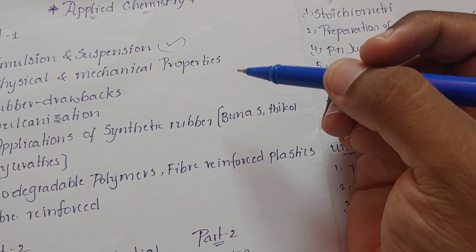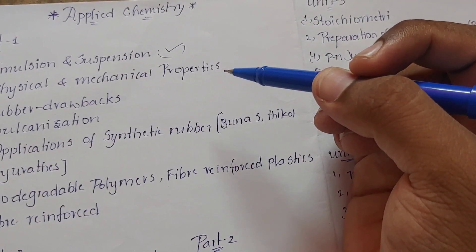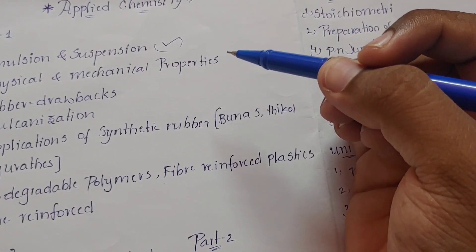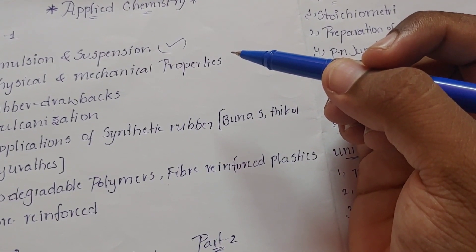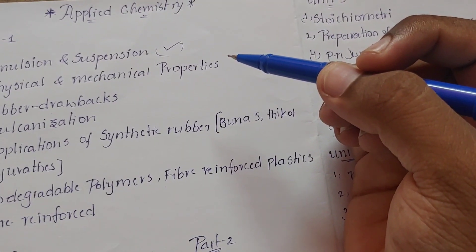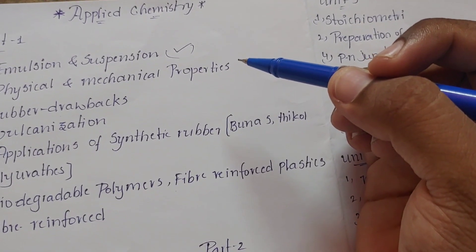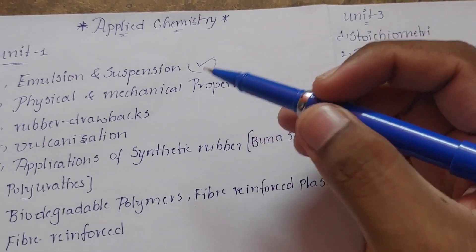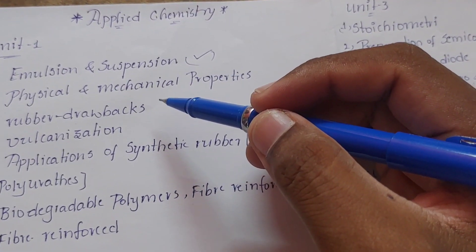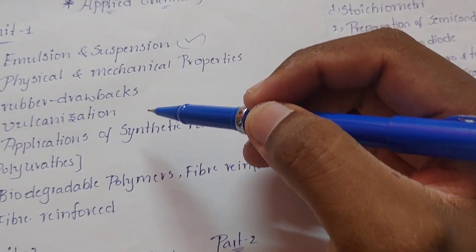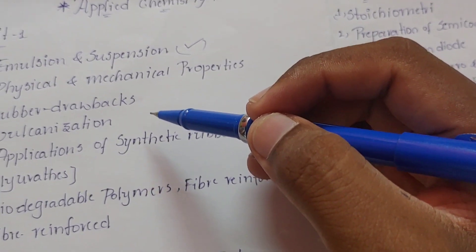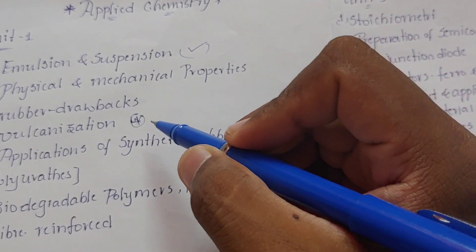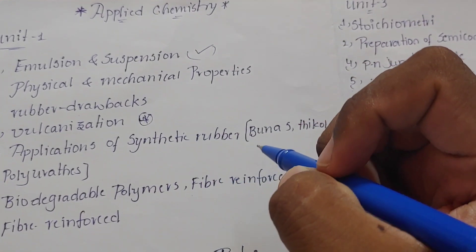In Unit 1, we will cover mechanical and physical properties. There is a simple table showing the differences between physical and mechanical properties. Other important topics include natural rubber and synthetic rubber, the vulcanization process of rubber, and the three applications of synthetic rubber.